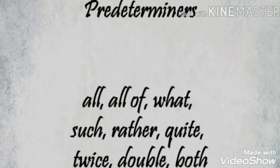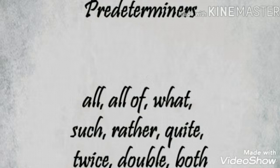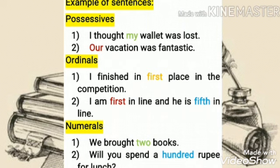Now you know how to identify determiners — all these types of words come under the category of determiners. Let's see some examples. Possessives: 'I thought my wallet was lost' — here, 'my' is the possessive before the noun 'wallet.' 'Our vacation was fantastic' — here, 'our' is the possessive. Ordinals: 'I finished in first place in the competition.' 'I am first in line and he is fifth in line.' Here, 'first' and 'fifth' are called ordinals.